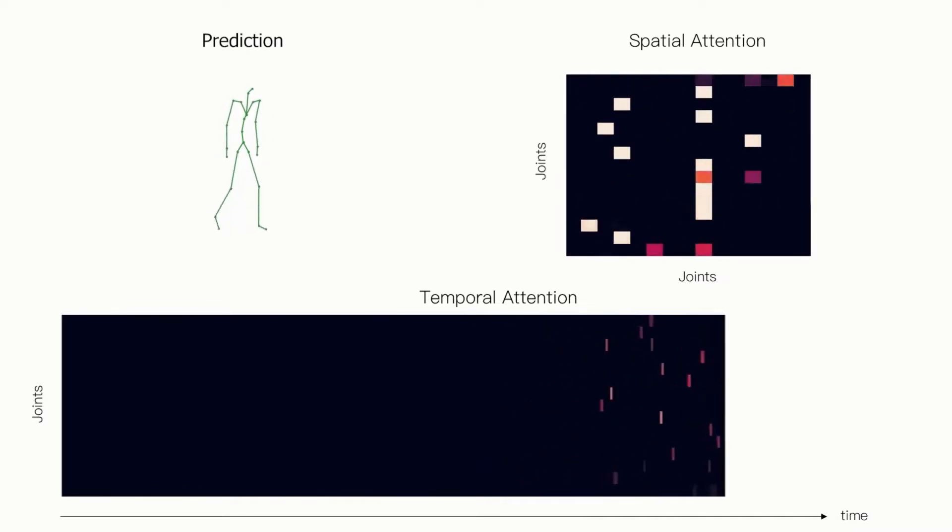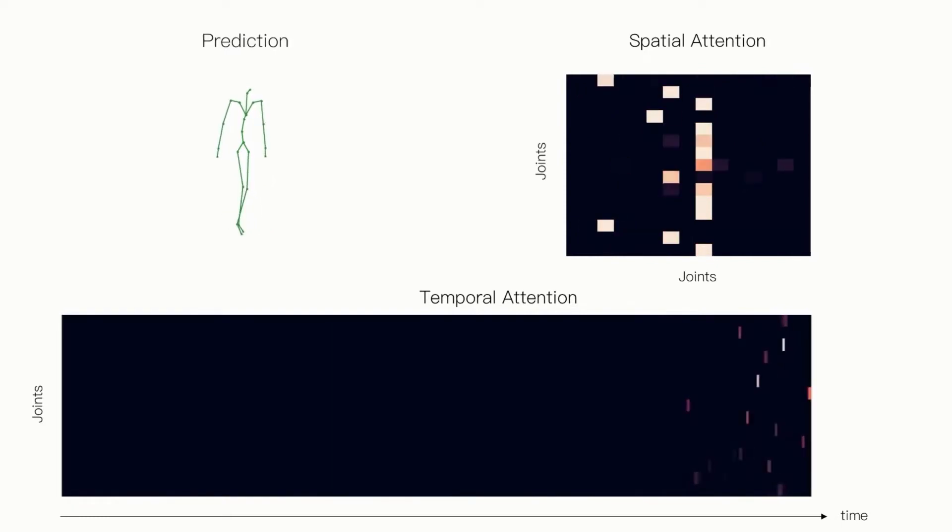The temporal attention is calculated over a sliding window of 120 time steps and it can be seen that the model is able to make use of information across this window.